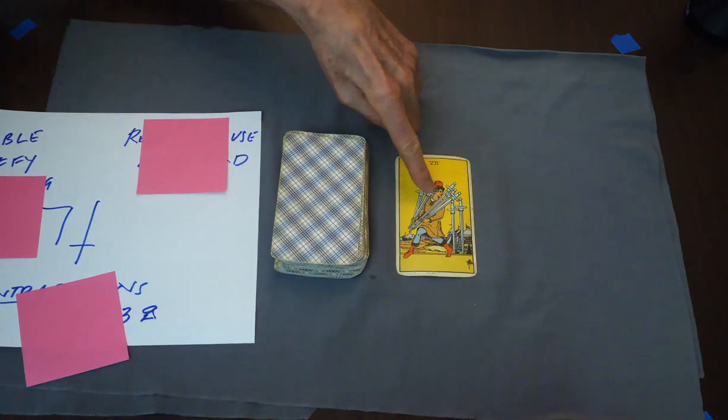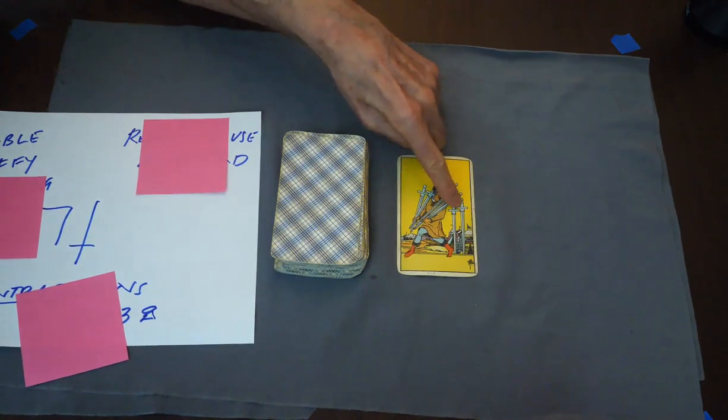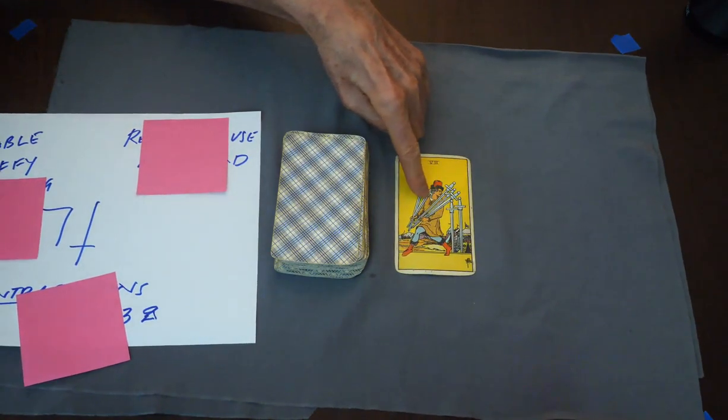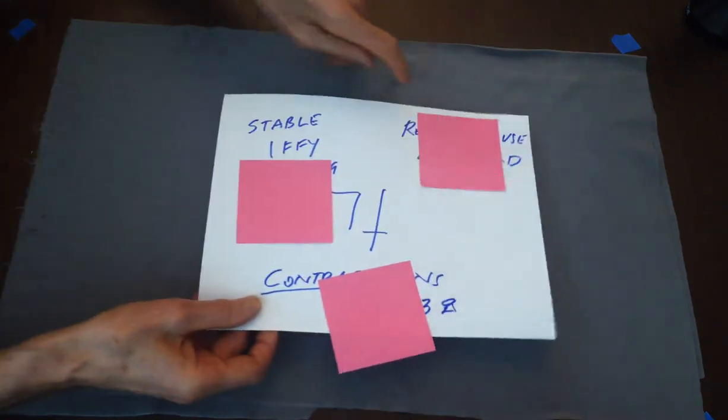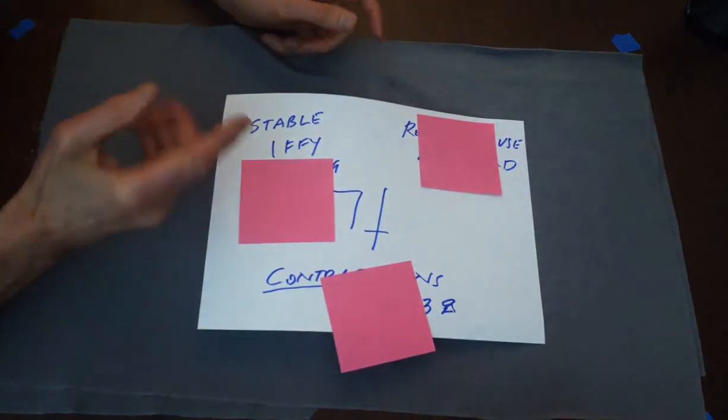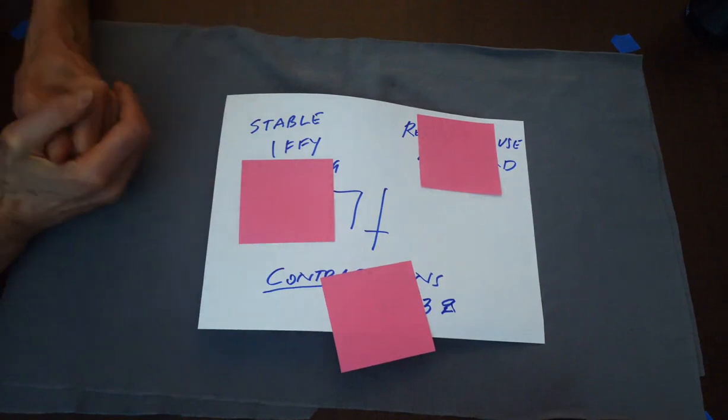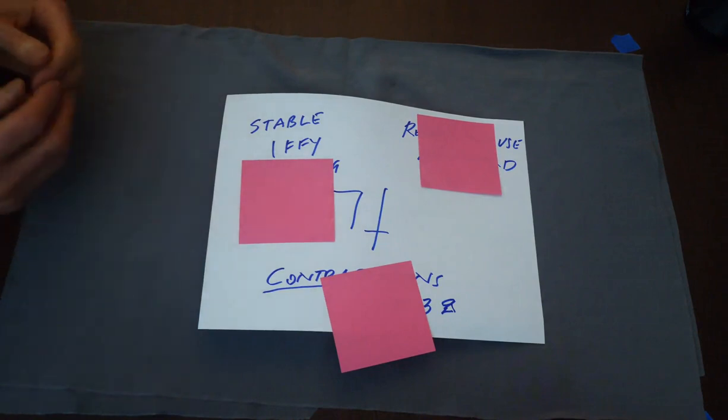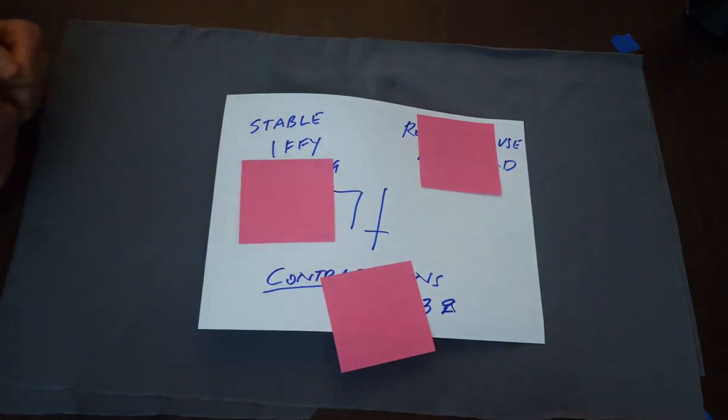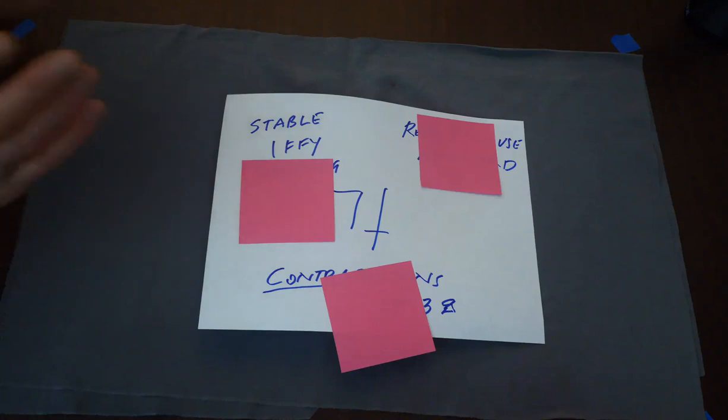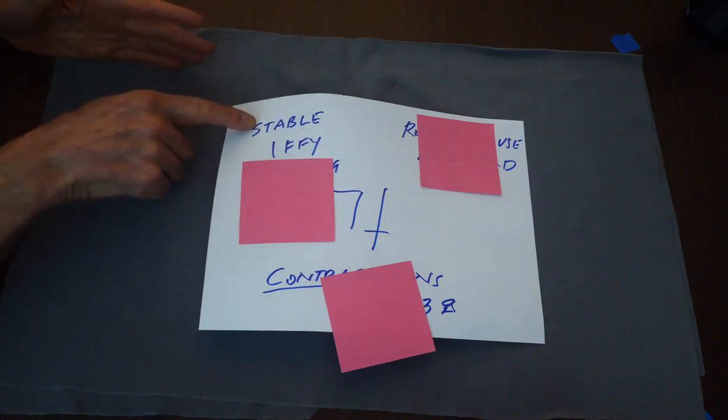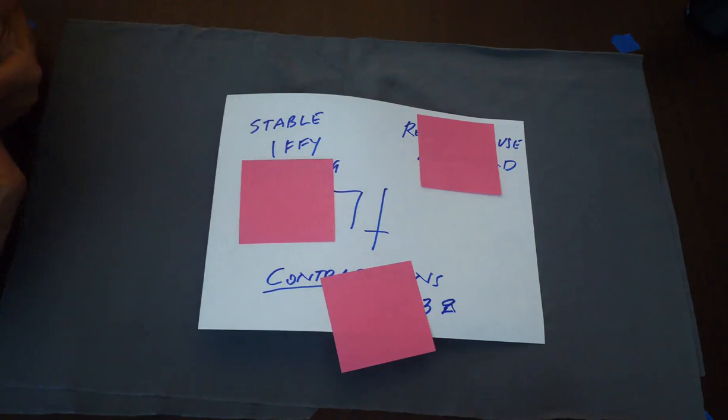Rather than say this is stable and this is unstable, I wrote down stable and then iffy. If something is a little bit iffy, it's not quite right, maybe something's wrong with it, something's off. So the first thought I had was two swords are stable but the five are kind of iffy.